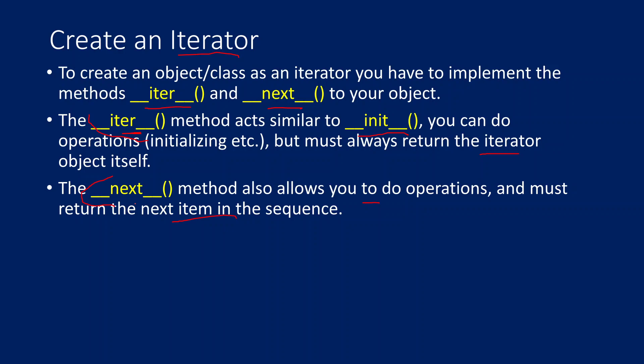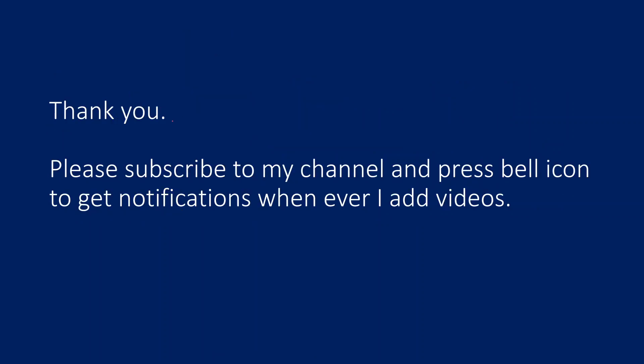This video may be a little confusing when you watch it the first time, but please try to watch it multiple times to make sense of it. Basically, we created a class like how list, tuple, set, and dictionary classes are iterable — from their objects we can create iterator objects using the iter function. Similarly, we created a new class that acts as an iterator by implementing __iter__ and __next__, and then used the iter function to create an iterator object and perform a loop on it. I hope you enjoyed this video. Thank you for watching. Please subscribe to my channel and press the bell icon to get notifications.